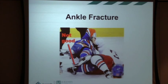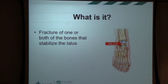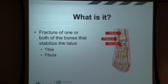Moving on to ankle fractures, which can occur in any sport, winter or otherwise. Your ankle is composed of three bones: the talus in the middle and lower part of the ankle, the tibia which comes down and forms the medial malleolus on the inside, and the fibula which comes down and forms the lateral malleolus on the outside. When you injure your ankle severely, you can either break bones or rupture ligaments — typically they occur in association, and usually one gives way before the other.